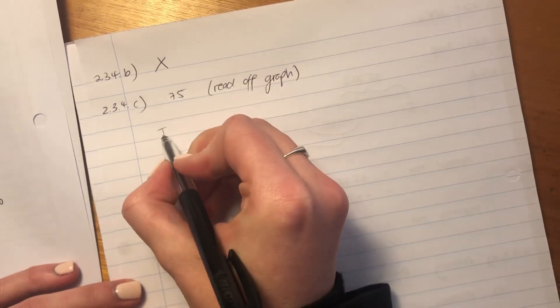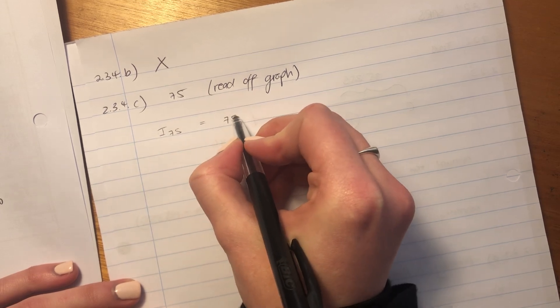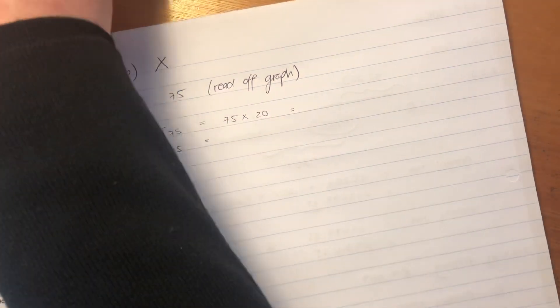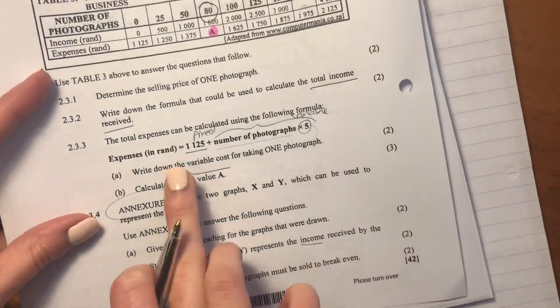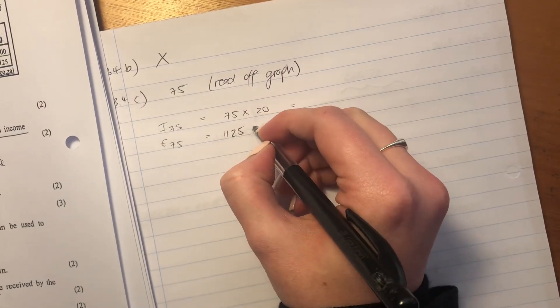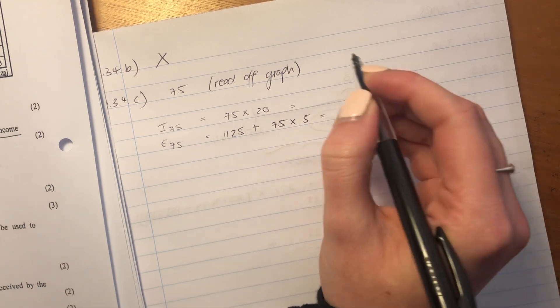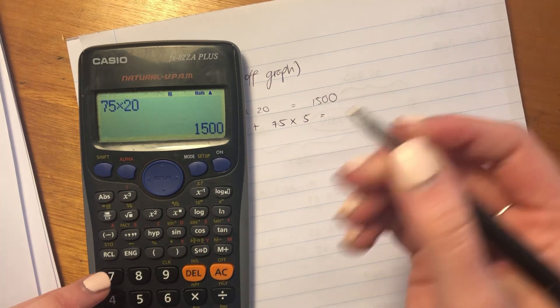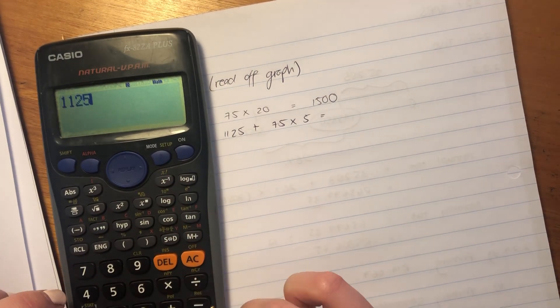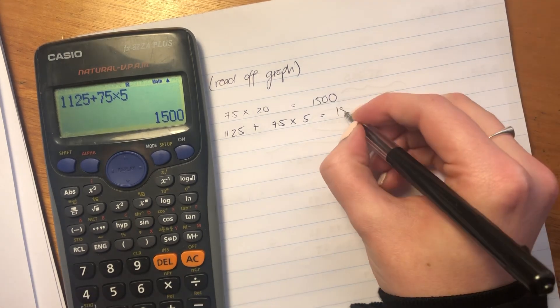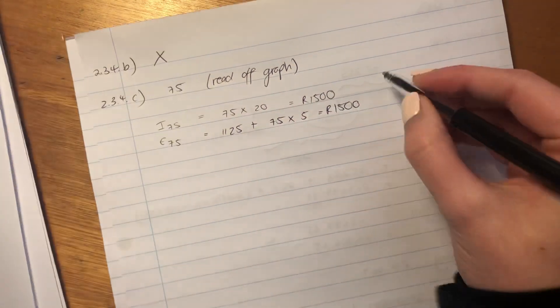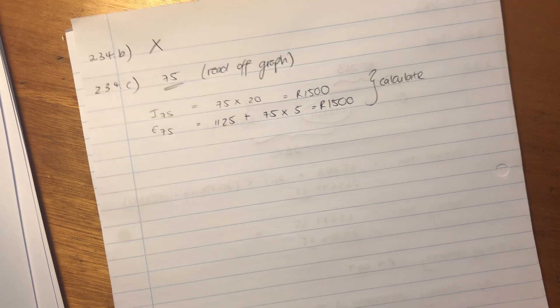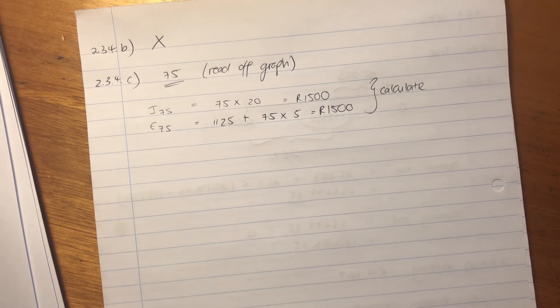Okay, but then we can say, what is our income at 75? We know that it would be 75 times 20. And what would be our expense at 75 with our little formula that we had from before would be 1,125 plus 75 times 5. Let's just see if those two numbers equal each other. They should in order for it to be our break even point. So that's 1,125 plus 75 times 5. And you can see that there's two different ways of doing it. You can read it off or you can calculate. Okay, but the answer is 75 photographs.